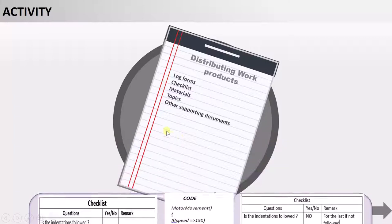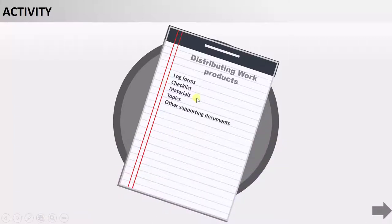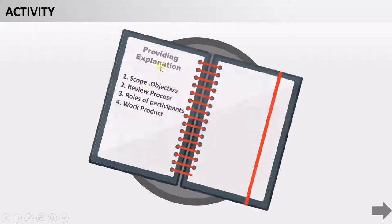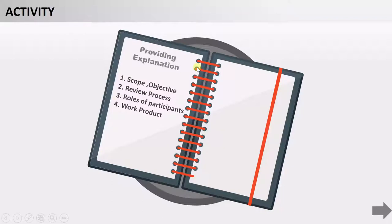Those are the documents we provide to the reviewer and other participants. The other agenda of the kickoff meeting is to provide explanation to ensure all things are clear. Explanation will cover the scope of the review — how much and what all things they have to review — the objective of the review, and the review process — what activities will be followed and who will do which activity.